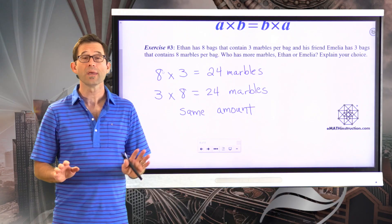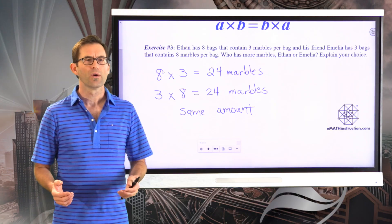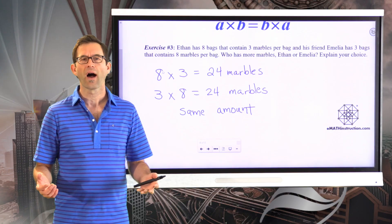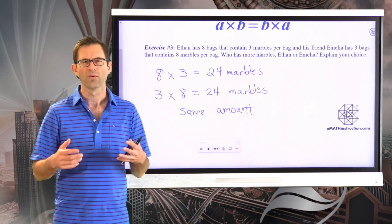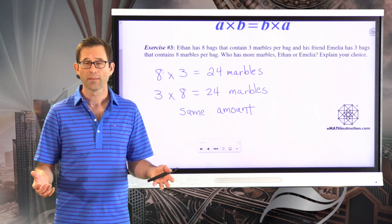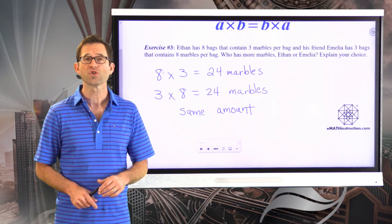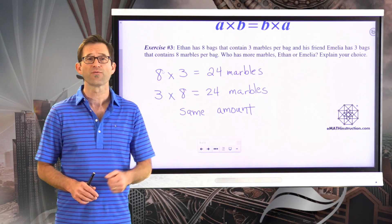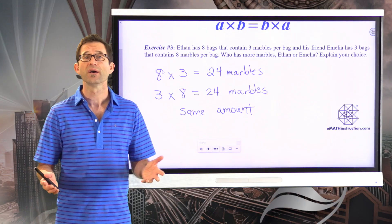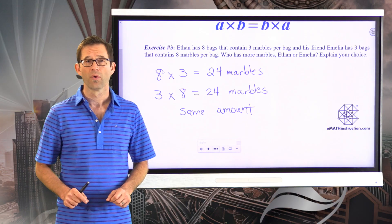The commutative property is amazingly important in multiplication. We oftentimes use it without even thinking about it. If you have something like 12 times 5 and that's difficult to think about, you can switch it around and think of it as 5 times 12. Addition has it as well — 3 plus 4 is 7, and 4 plus 3 is 7. It doesn't matter.